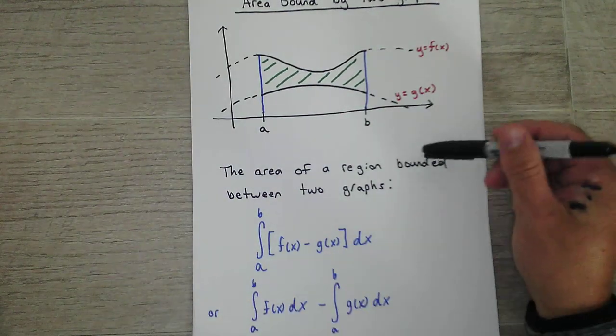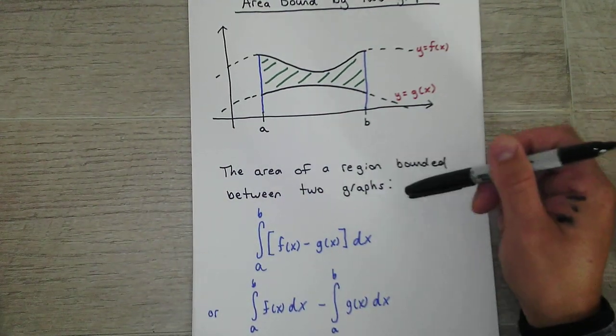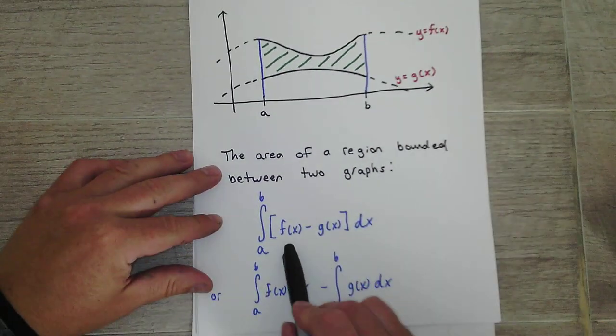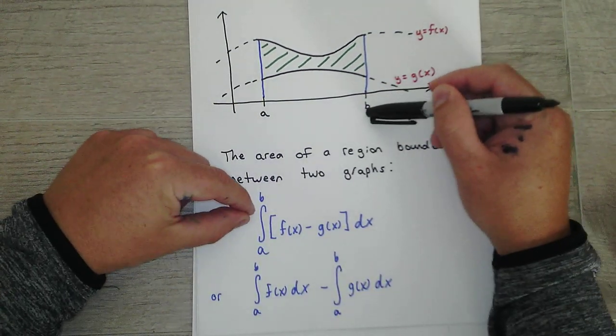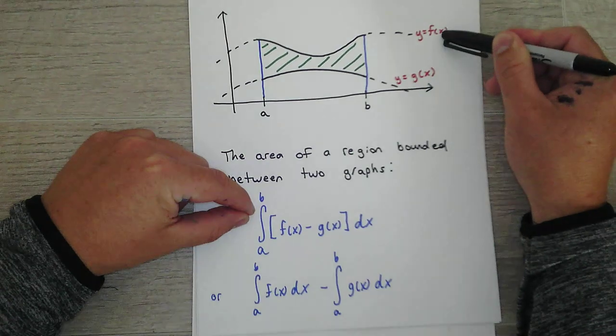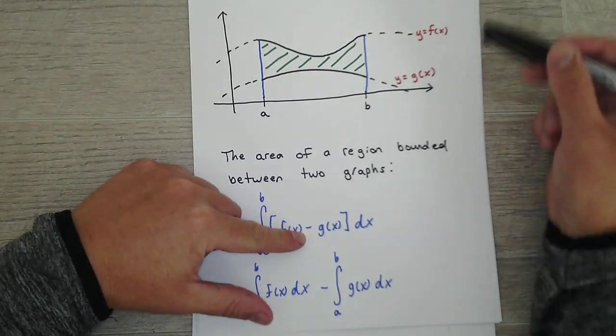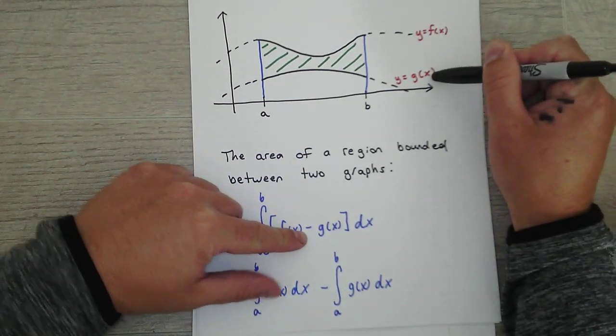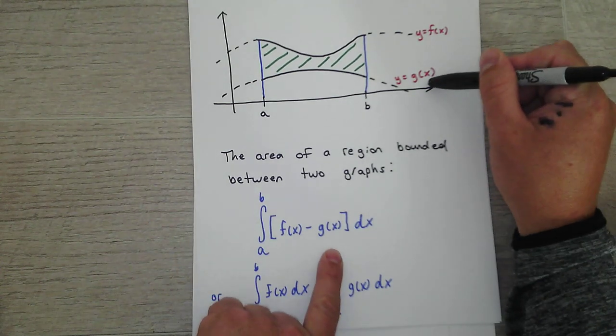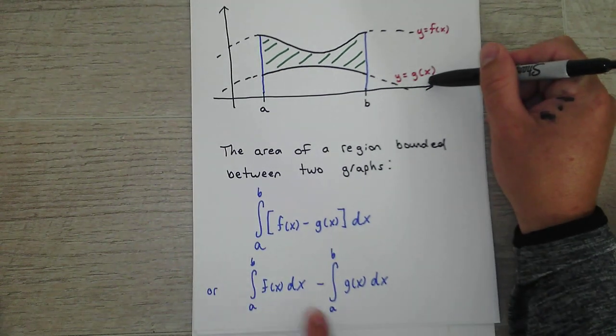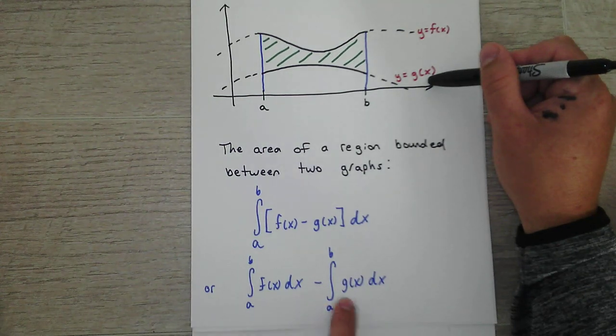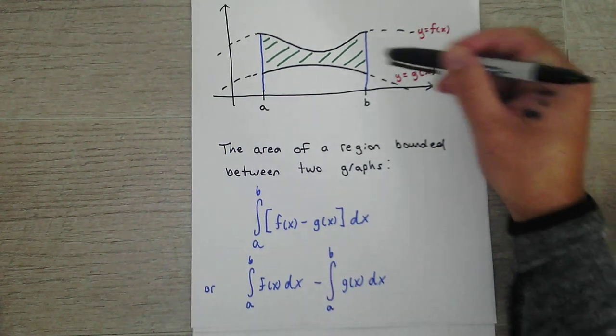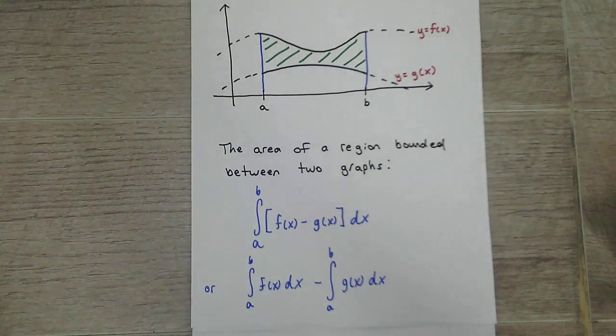Okay, so the area of a region bounded between two graphs is found by this formula. You evaluate it from a to b as normal and you evaluate this one from a to b, then you subtract the integration of g from a to b. So it's integration of f of x from a to b minus the integration of g of x from a to b. And that gives you the area bounded between the two graphs.